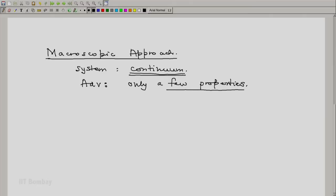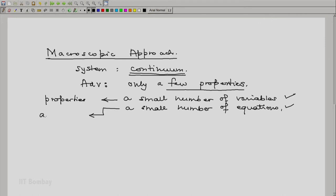But never more than a reasonably small number. And because of a few properties, we have a small number of variables. And hence, a small number of equations. Both of which are advantages for proceeding with the solution of a problem. So small number of variables means small number of properties. And small number of equations means a few laws and other relation that we have to work with.